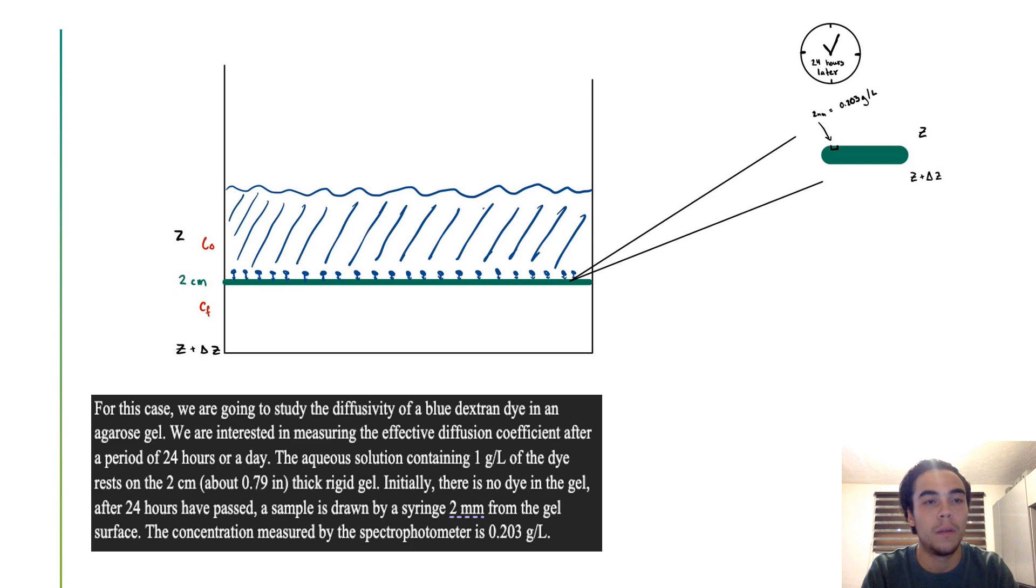We draw a model for our system. We can see that there is an initial concentration, a final concentration, our semi-infinite slab, and we have a clock that is going to tell us that we're going to measure it after 24 hours.